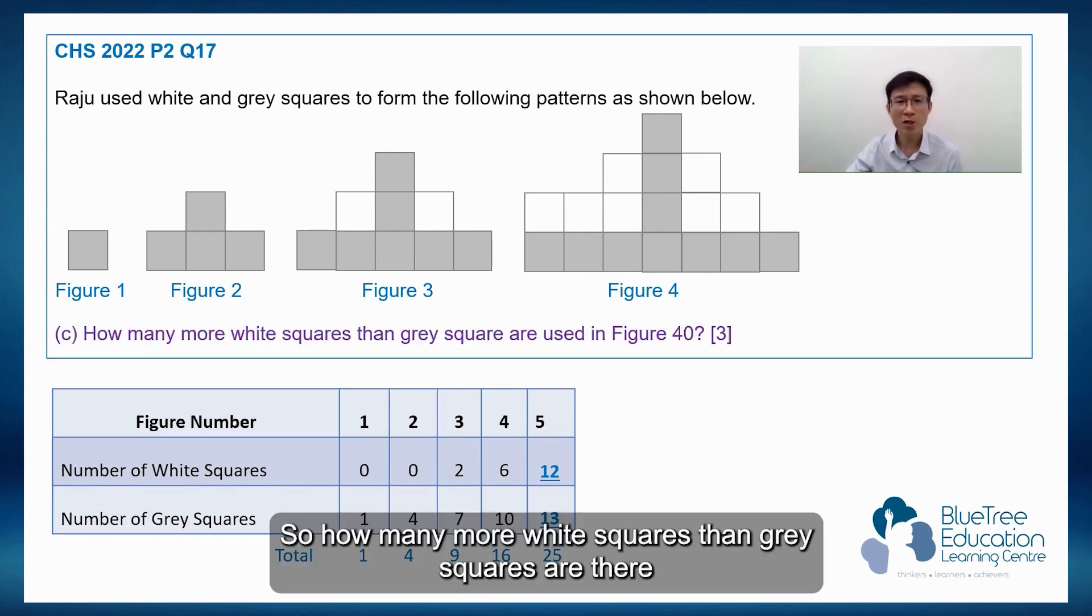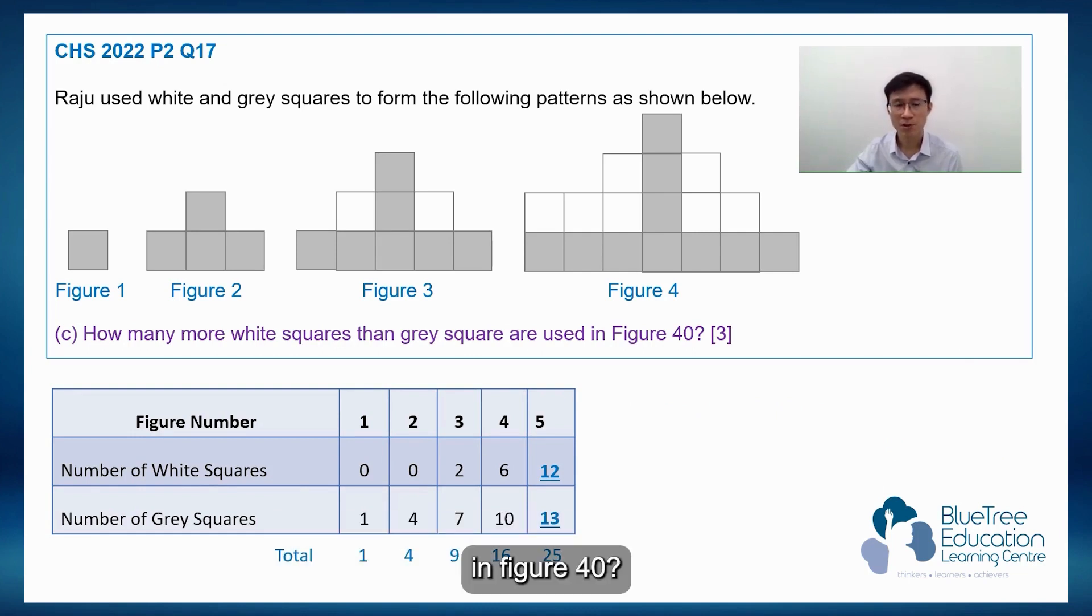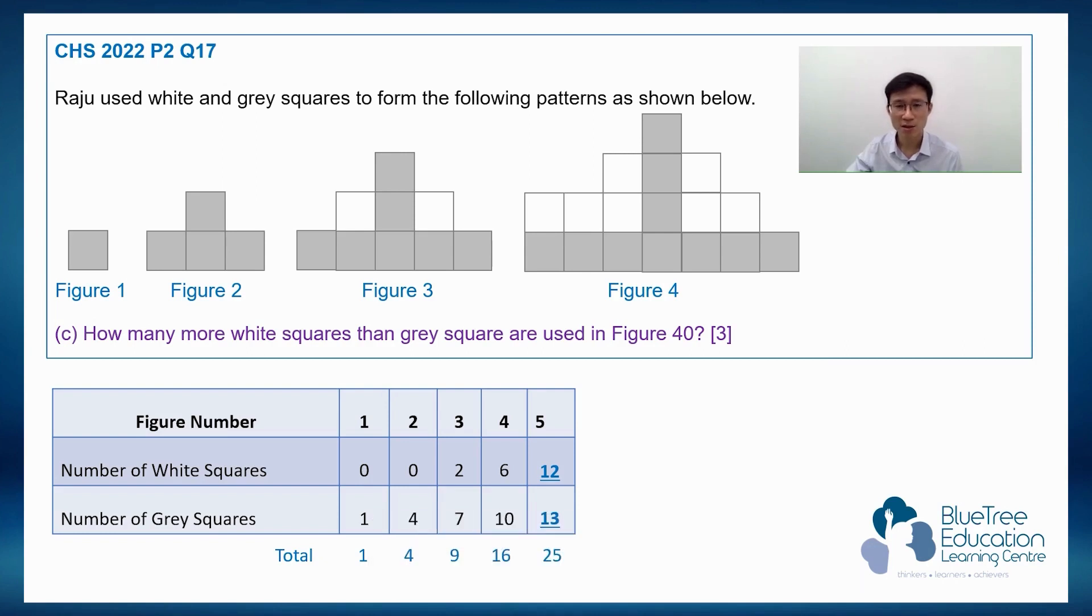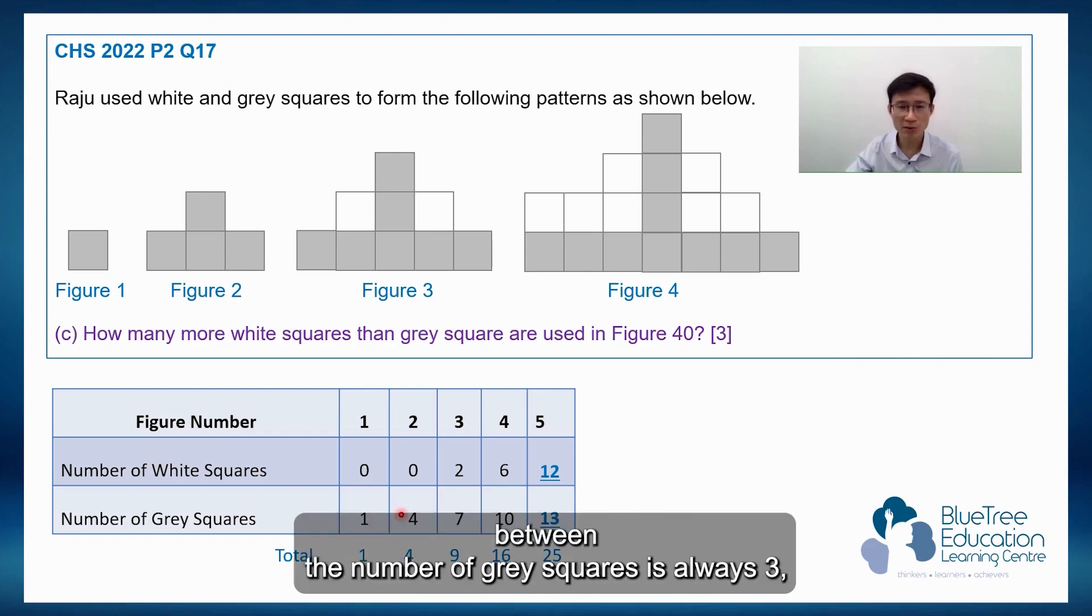So how many more white squares than gray squares are there in figure 40? To do that, let's look for patterns. Can you see that the number of gray squares have a pattern? Do you see that the interval between the number of gray squares is always 3?